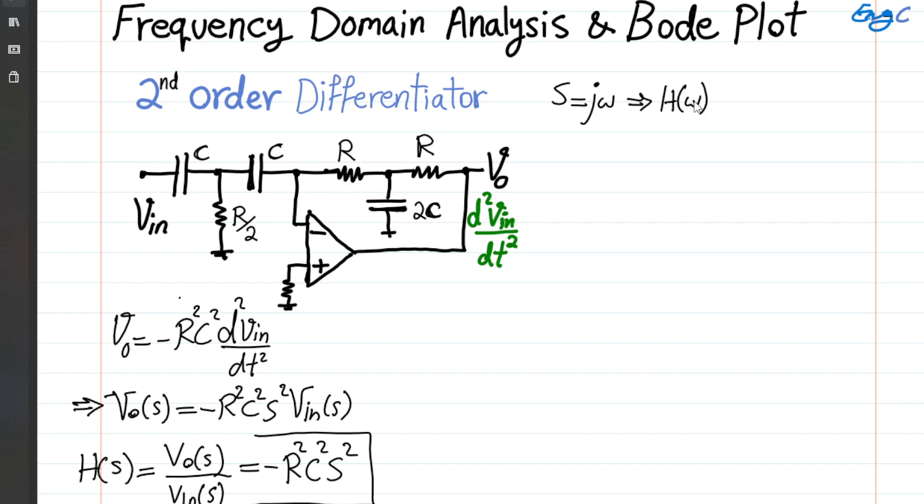And then with that, H of jω, or simply H of ω, or the transfer function just at jω becomes negative R squared C squared, and then S squared, which is jω squared, as a result becomes simply plus R squared C squared ω squared.